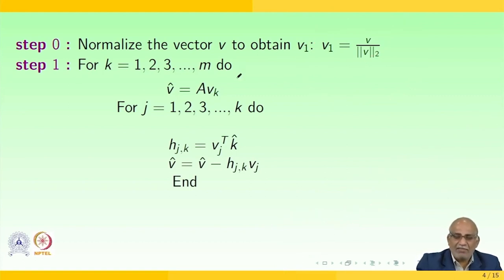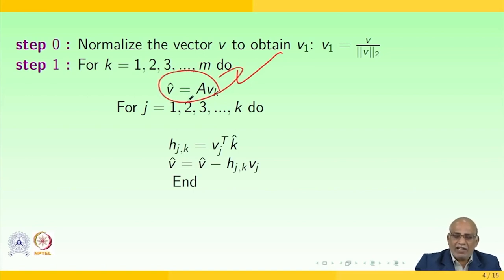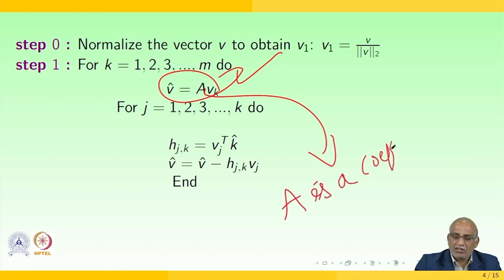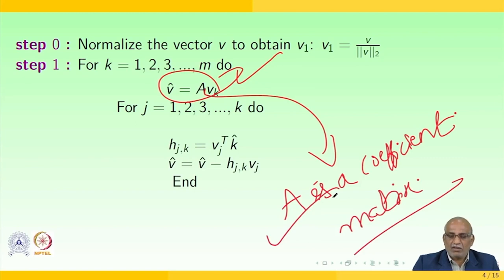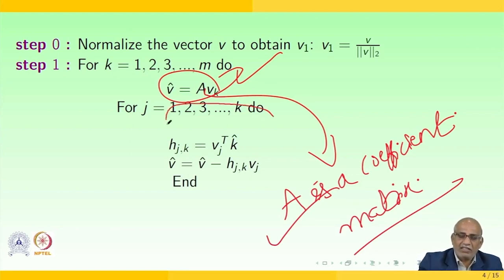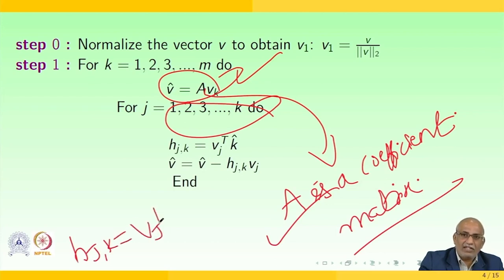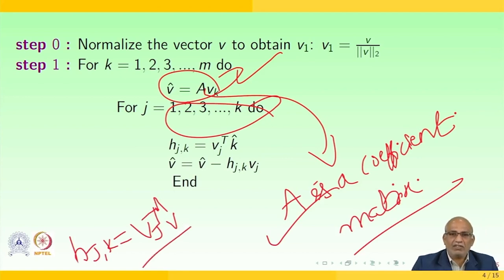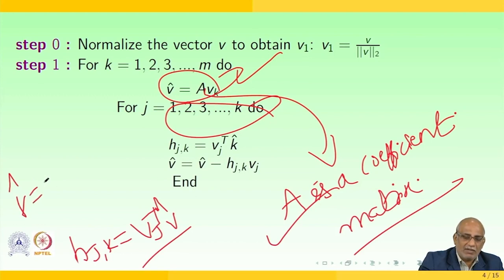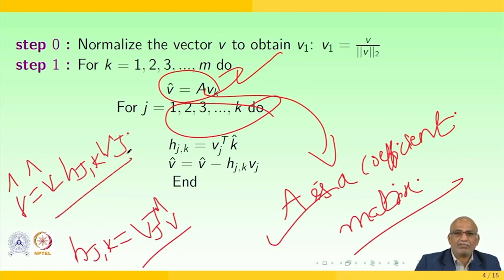For k = 1, 2, 3, ..., m: compute V̂ = A·V_k, where A is the coefficient matrix. Then for j = 1, 2, 3, ..., k: set h(j,k) = V_j^T · V̂, and update V̂ = V̂ − h(j,k)·V_j. End the inner loop.